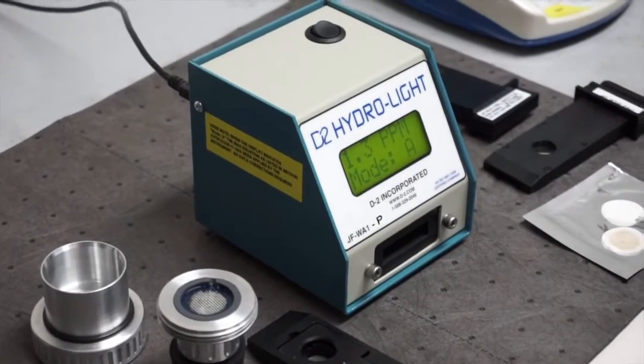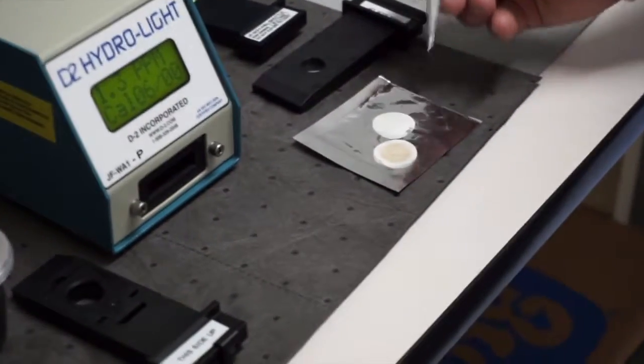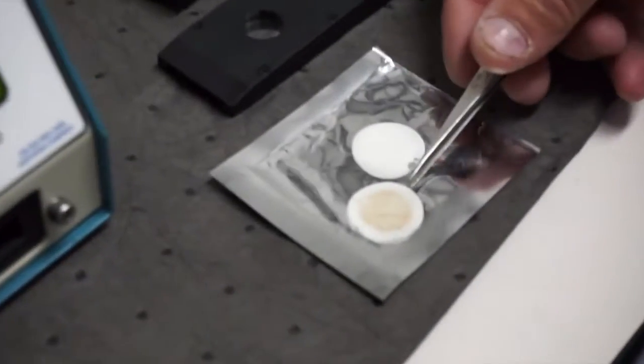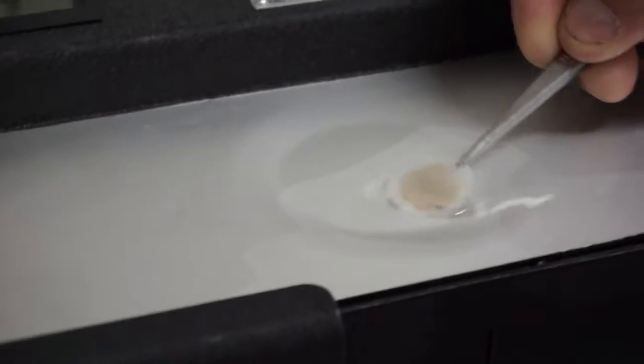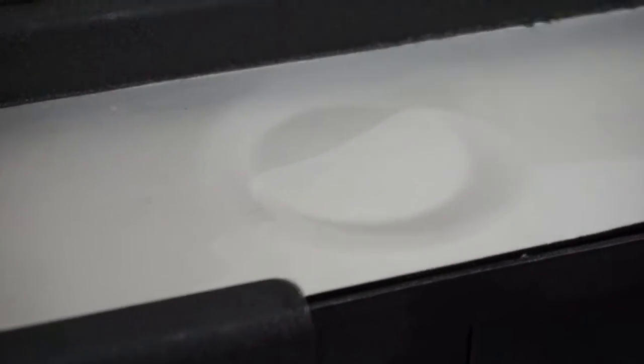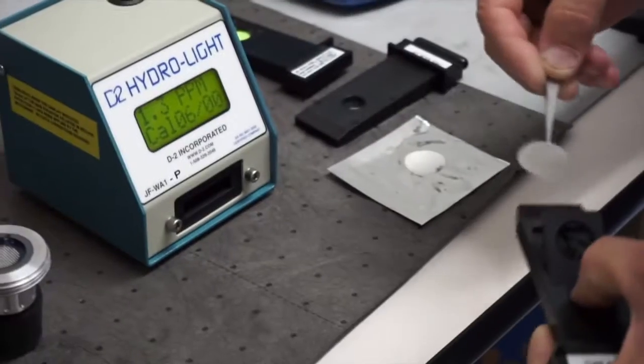The other question we get asked a lot about is the two pads. You can see they've dried out, but in the original method, the Navy tells you that if you have a dried out pad, you can simply soak it in fuel and then put it back in and redo the measurement.